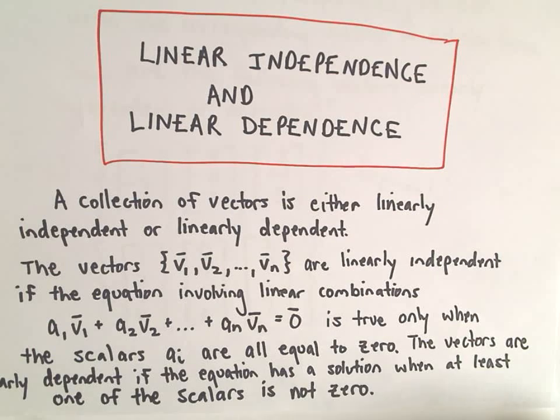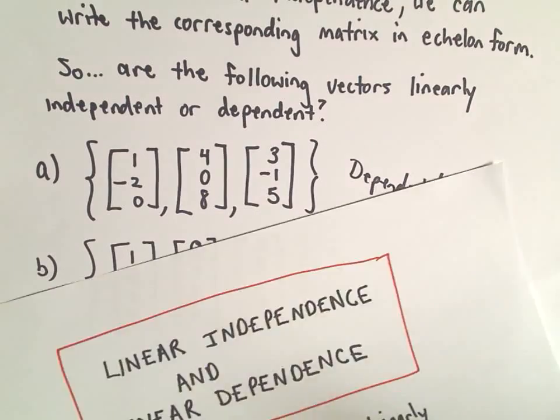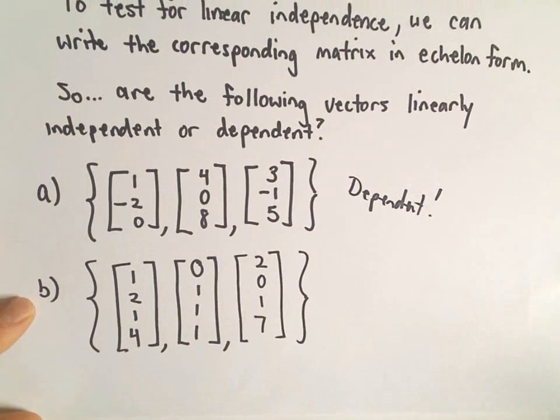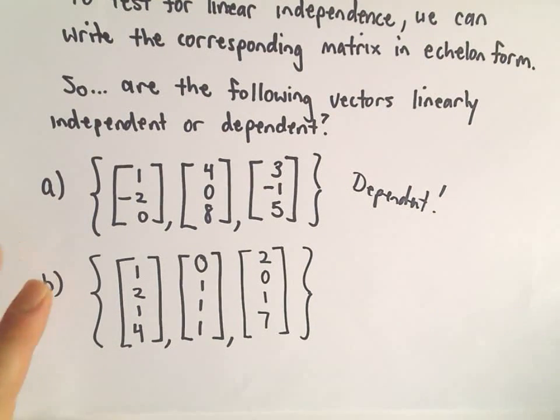Alright, in this video we're going to do another example of deciding if a set of vectors, a collection of vectors, is linearly independent or dependent. And if you watched part A and you saw that this was dependent, I think I told you that part B was independent. But let's just go through the steps to verify that and make sure.